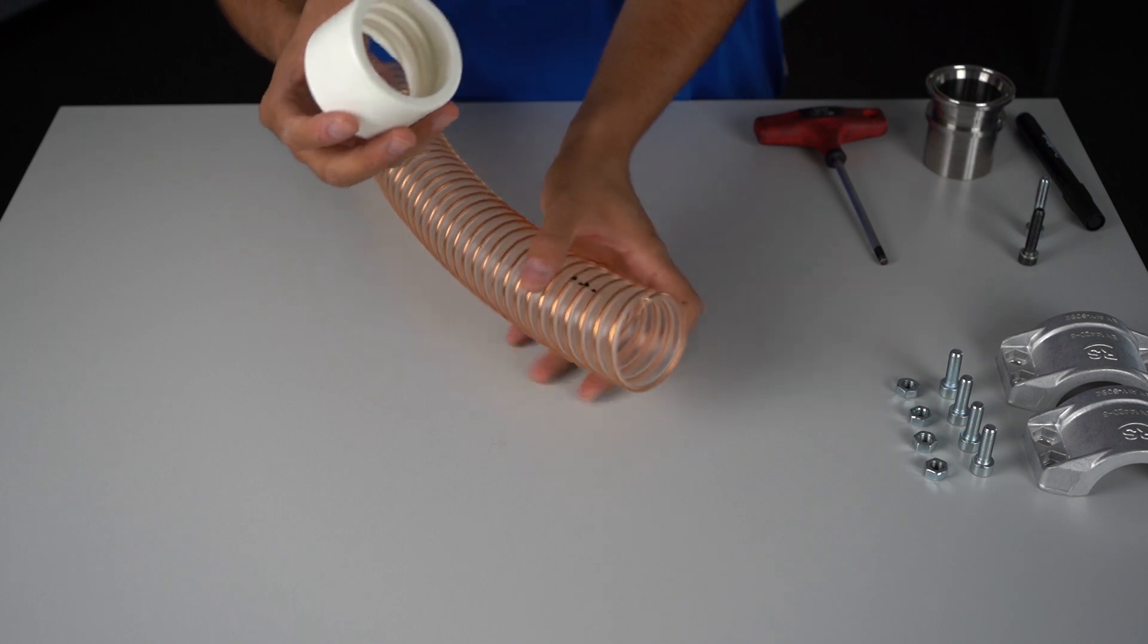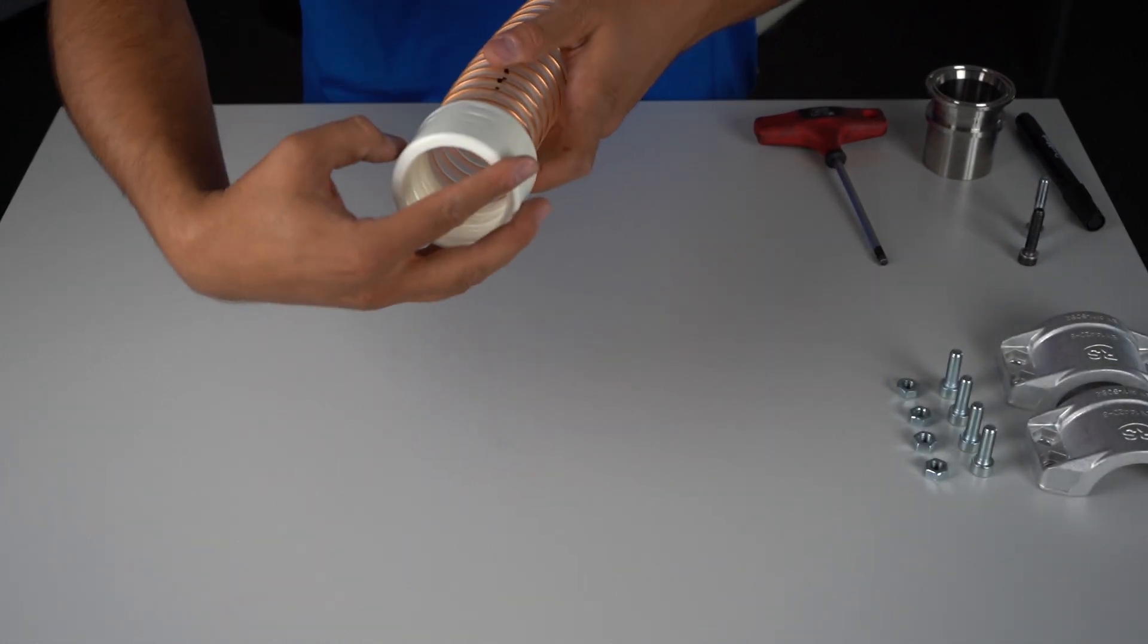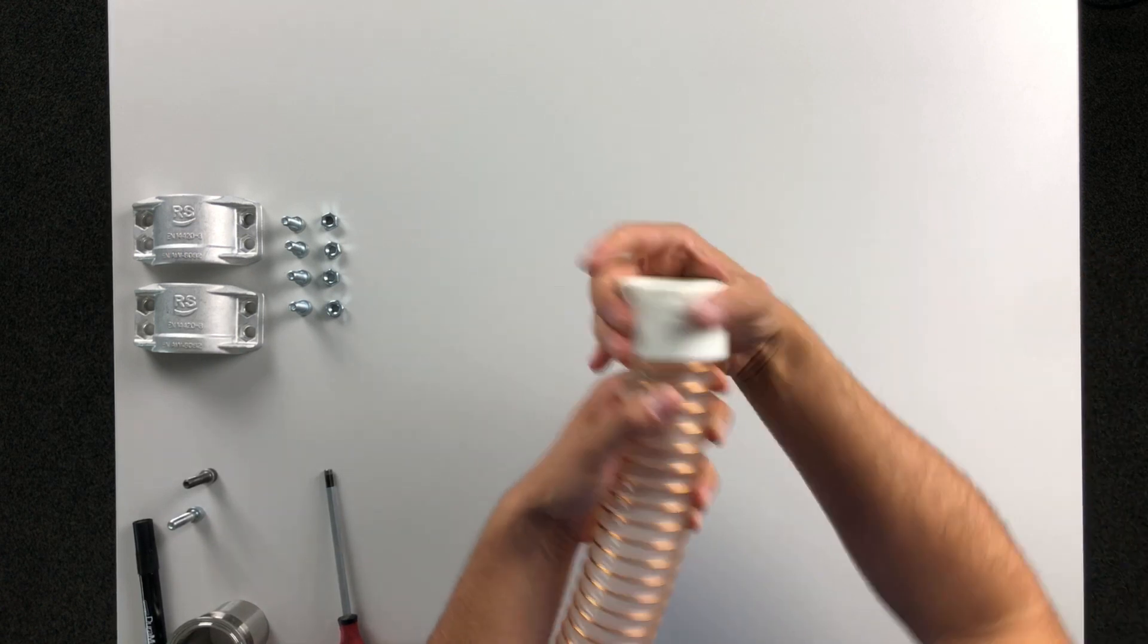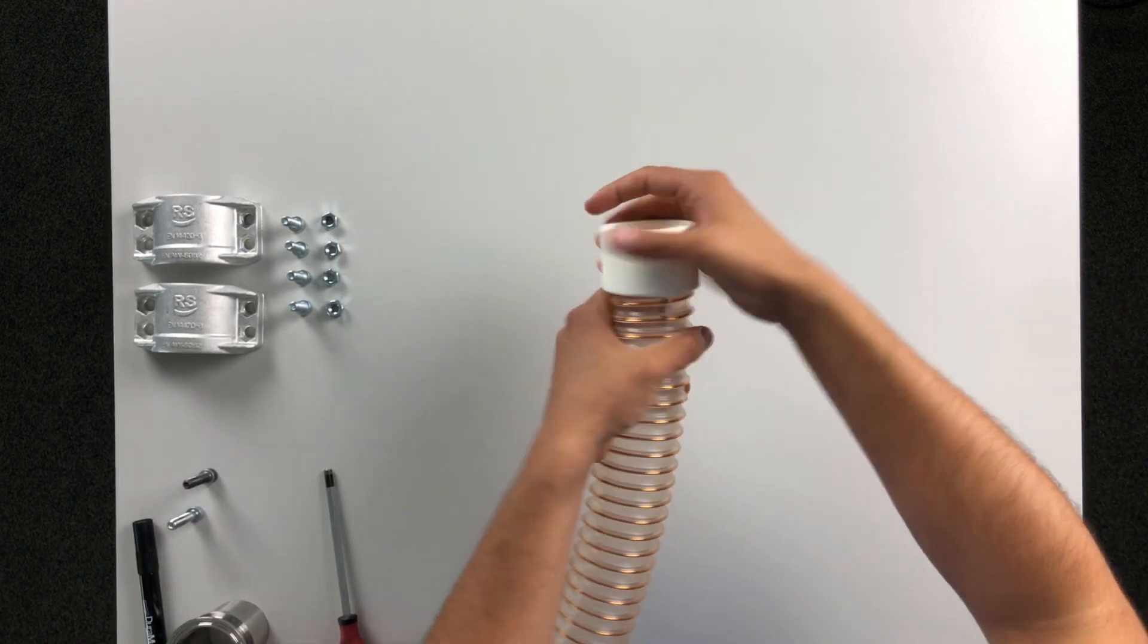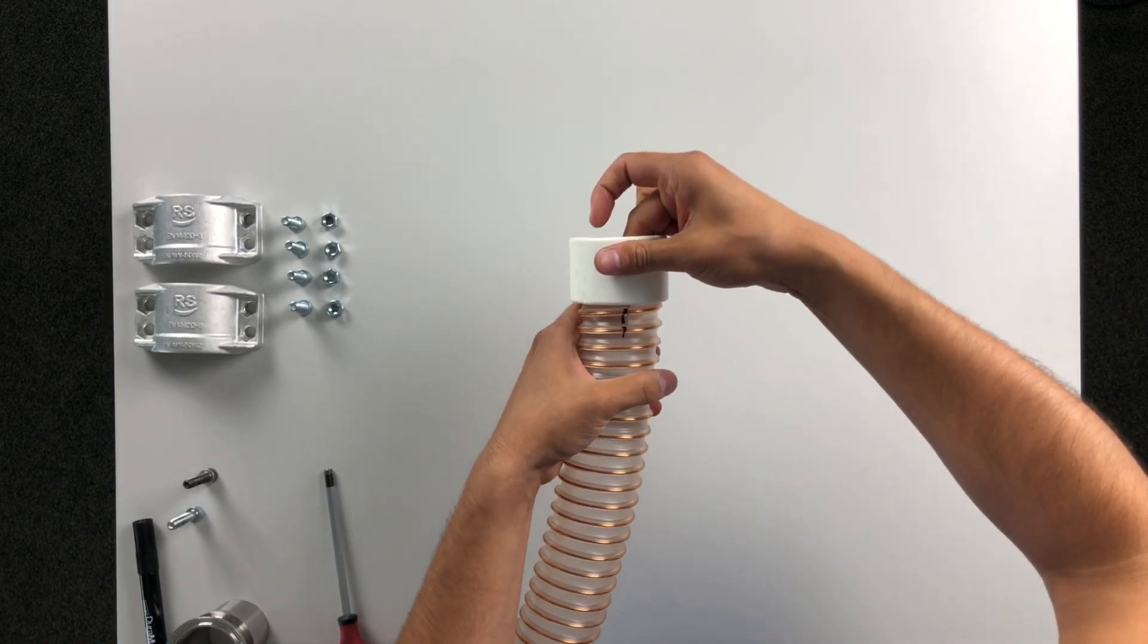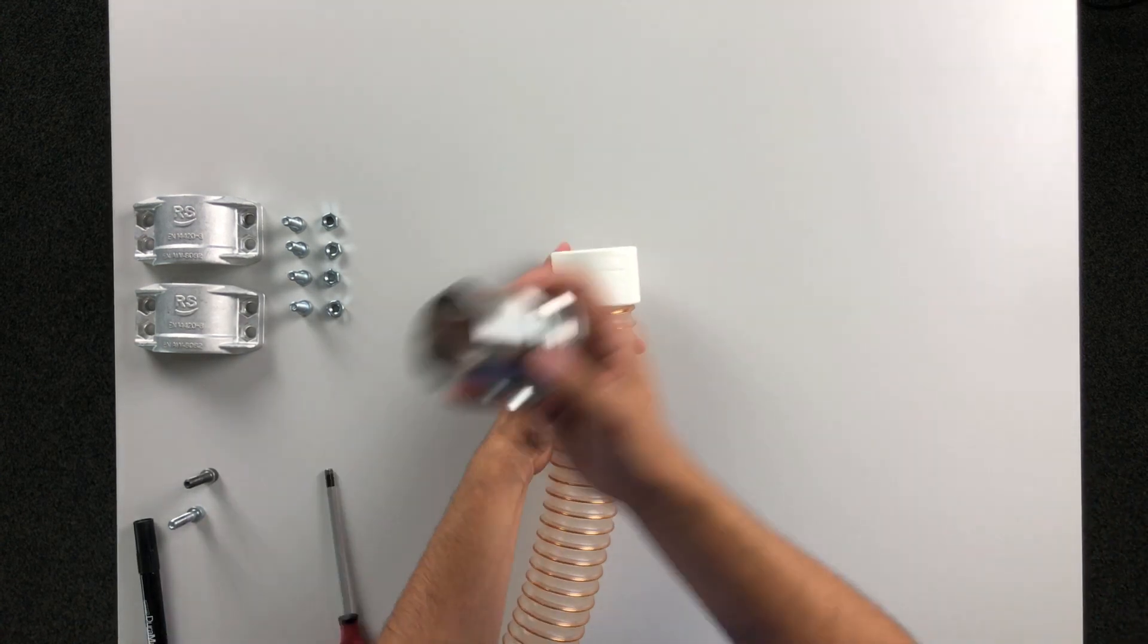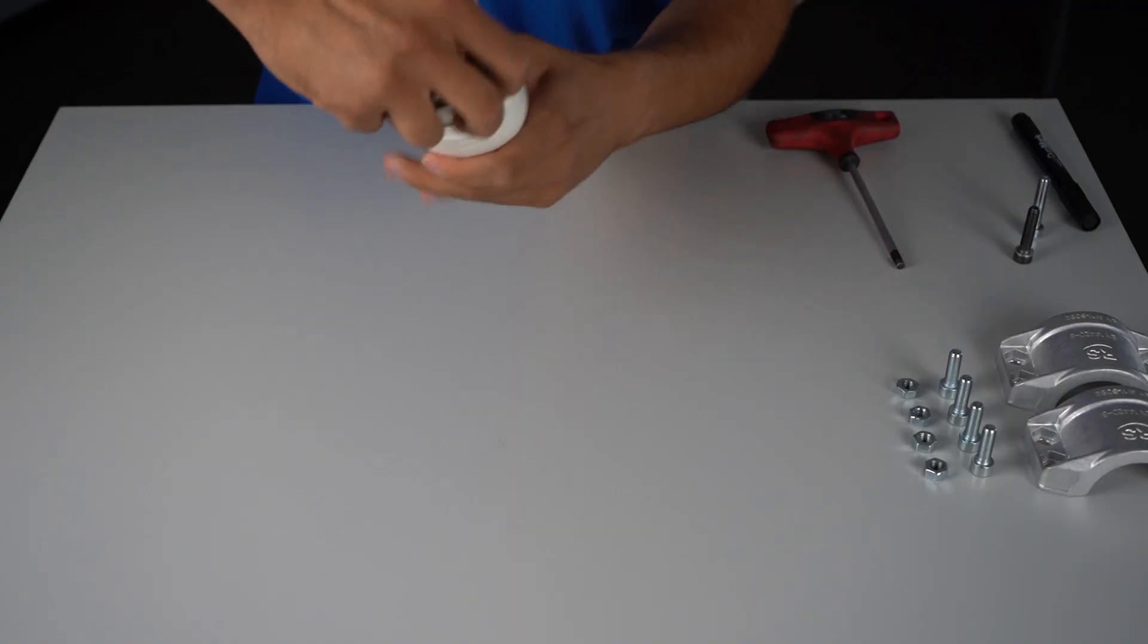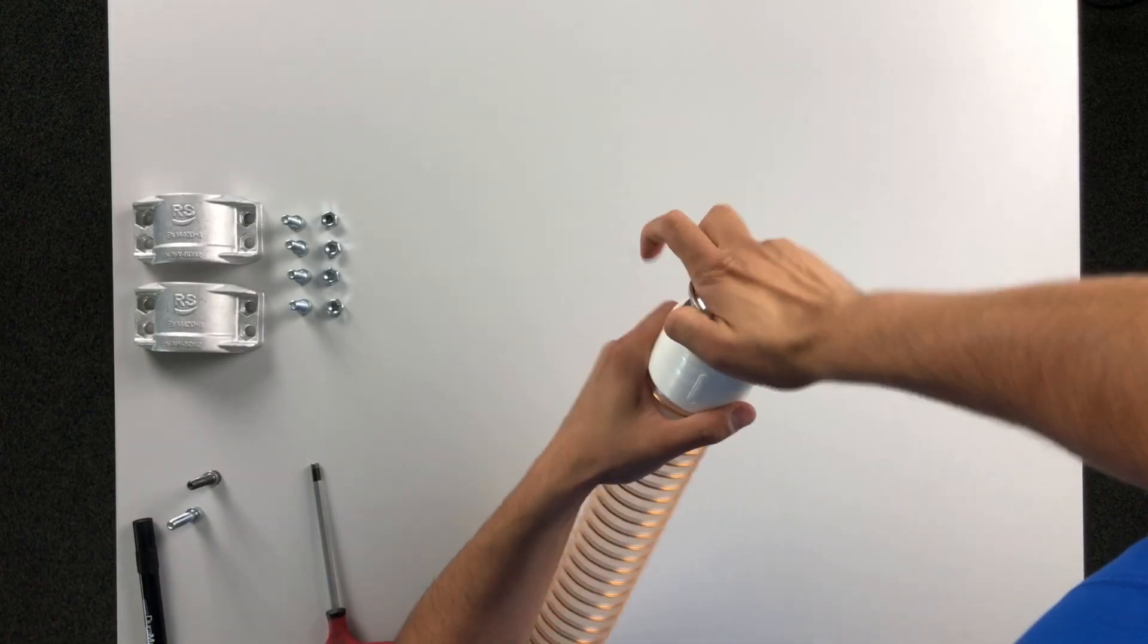Then we turn the sealing insert up to the stop on the hose. Push the hose including the sealing insert up to the safety collar onto the nozzle.